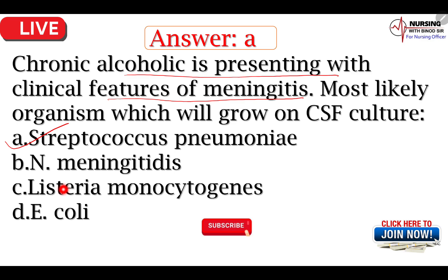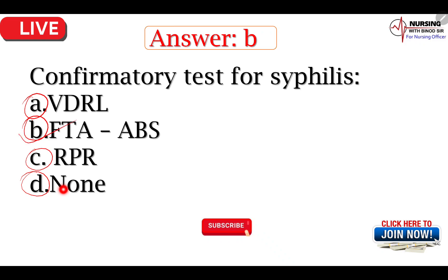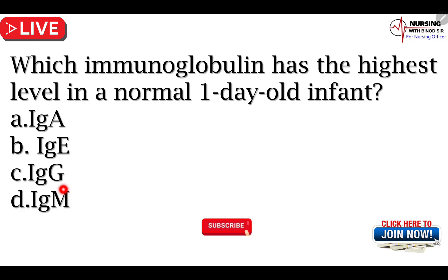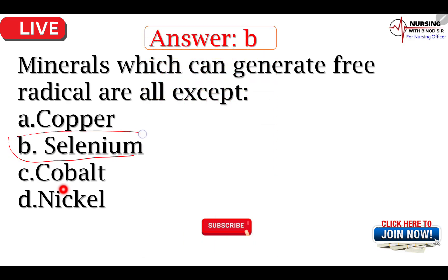Now we can come back to the next question। Chronic confirmatory test for syphilis — इसके बारे में discussion कर चुके हैं। VDRL, FTA-ABS, RPR, none of the above। B option — FTA-ABS होगा। Which immunoglobulin has the highest level in normal one day old infant — IgG। Mineral which can generate free radicals are all accepted — selenium generally free radical generate नहीं करती है।